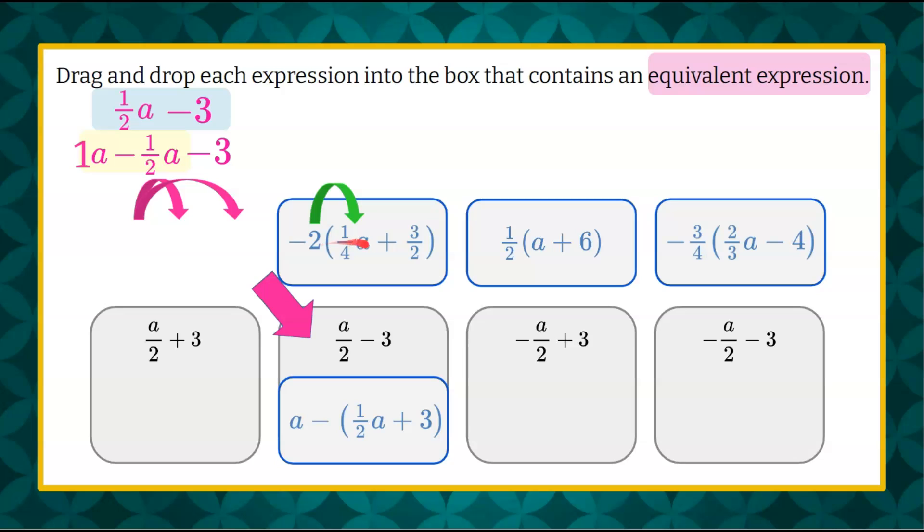So negative 2 times 1 fourth a. Negative 2 times 1 fourth is negative 2 fourths, which simplifies to negative 1 half a. Negative 2 multiplied by positive 3 halves, 2 divided by 2 is 1, leaving me with negative 3. Reminding you that negative 1 half a is the same as negative a divided by 2. Let's drag and drop this expression over to here and clean up our workspace.